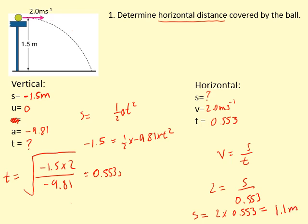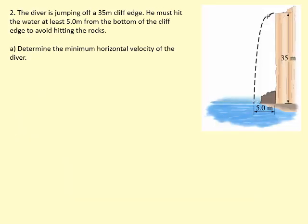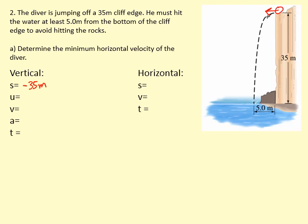The horizontal distance is then v × t = 2 × 0.553 = 1.1 meters. That's how far the ball travels horizontally before hitting the ground. Next question: a diver jumps off a 35-meter cliff edge and must hit the water at least 5 meters from the base to avoid the rocks. Determine the minimum horizontal velocity. We assume the diver jumps horizontally — vertical displacement is minus 35 meters, initial vertical speed is zero, and acceleration due to gravity is minus 9.81 meters per second squared.